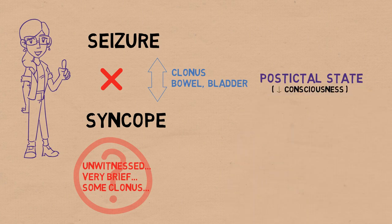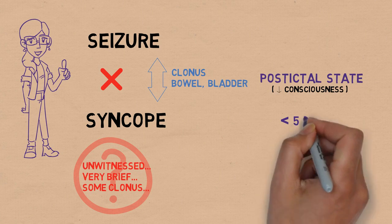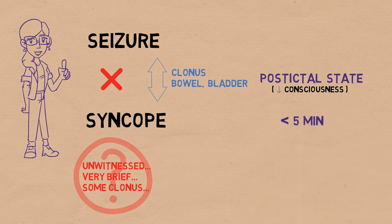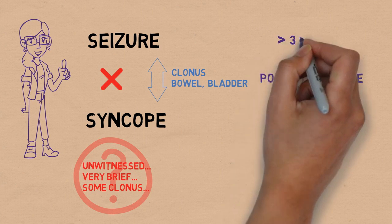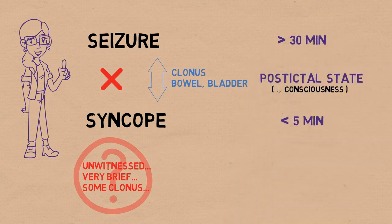In a syncope, a simple fainting, this period is very brief, usually only a few seconds, but almost always under five minutes. While in a seizure, this post-ictal state will usually last for at least 30 minutes, and usually much more.